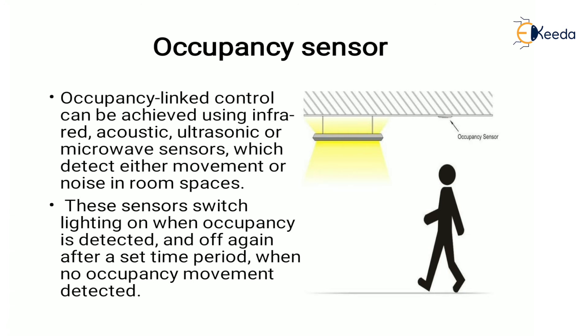First is the occupancy sensor. Occupancy linked control can be achieved using infrared or ultrasonic sensors which detect either movement, motion, or noise in a room space. These occupancy sensors sense the occupancy in a particular room and switch the light on when occupancy is detected, and off again after a set time period when no occupancy or movement is detected.